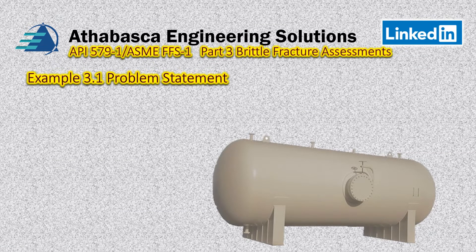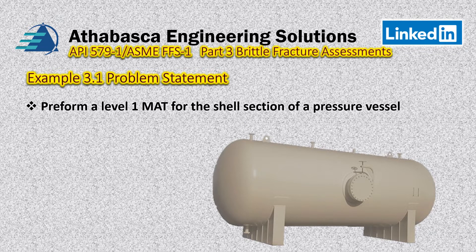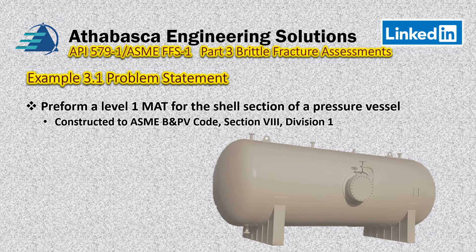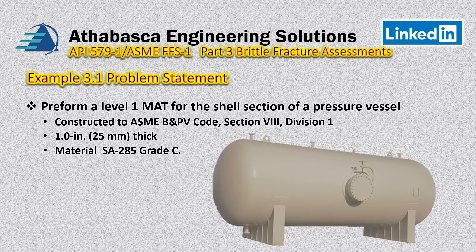We're going to perform a Level 1 MAT assessment for a shell section of a pressure vessel constructed to ASME Boiler and Pressure Vessel Code Section 8 Division 1. In this example, the shell we're looking at is one inch thick, made out of a very common structural material called SA-285 Grade C, which is found quite a lot in the United States.